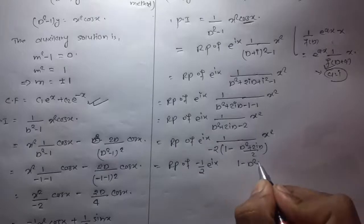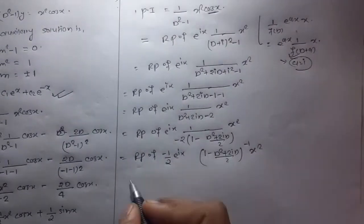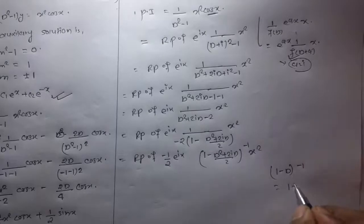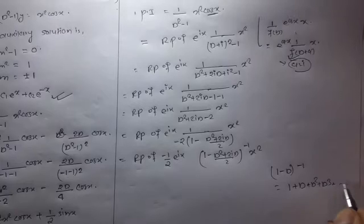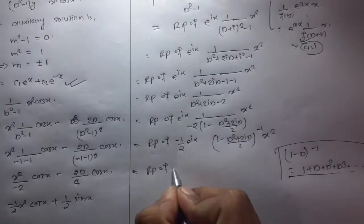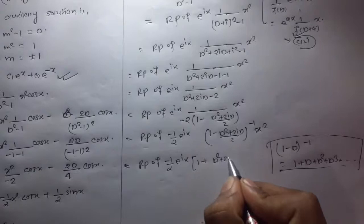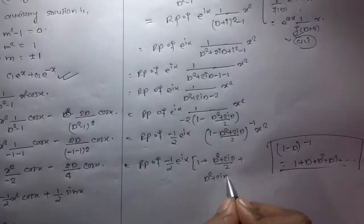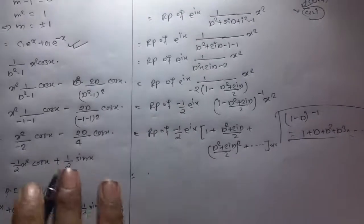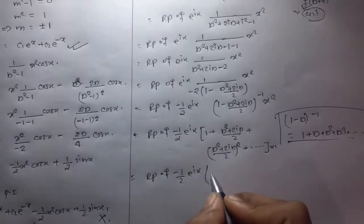We factor out -2: real part of e^(ix) · 1/(-2) · 1/(1 - (D² + 2iD)/2) · x². This is the real part of -1/2 · e^(ix) · [1 - (D² + 2iD)/2]⁻¹ · x². We expand using the binomial series: (1 - u)⁻¹ = 1 + u + u² + …, so this becomes the real part of -1/2 · e^(ix) · [1 + (D² + 2iD)/2 + ((D² + 2iD)/2)² + …] · x².